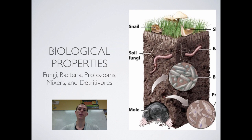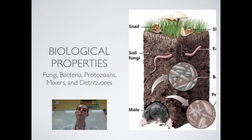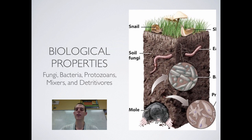The last biological property of soil you need to know about is the stuff living in the soil. Generally, healthy soils have more living things in them. About 90% of the living things in soil are either fungi, bacteria, or protozoans. You also have your mixers — things like mice, moles, rabbits, anything that burrows through the soil and mixes it up. And then you have your detritivores, which are things that break down stuff living on the surface of the soil, like snails, slugs, or beetles that decompose material. All of these things go together to mix, aerate, and decompose stuff down into the soil.